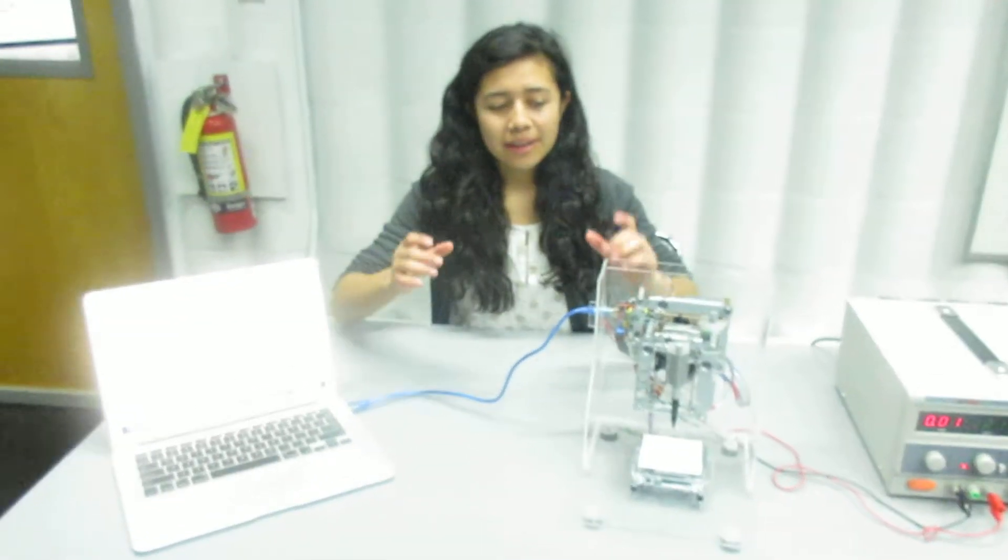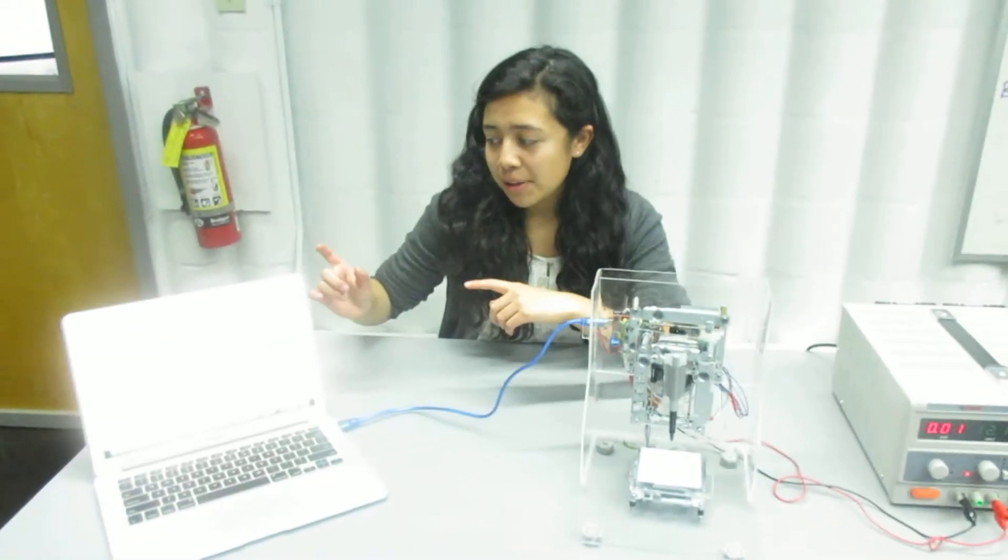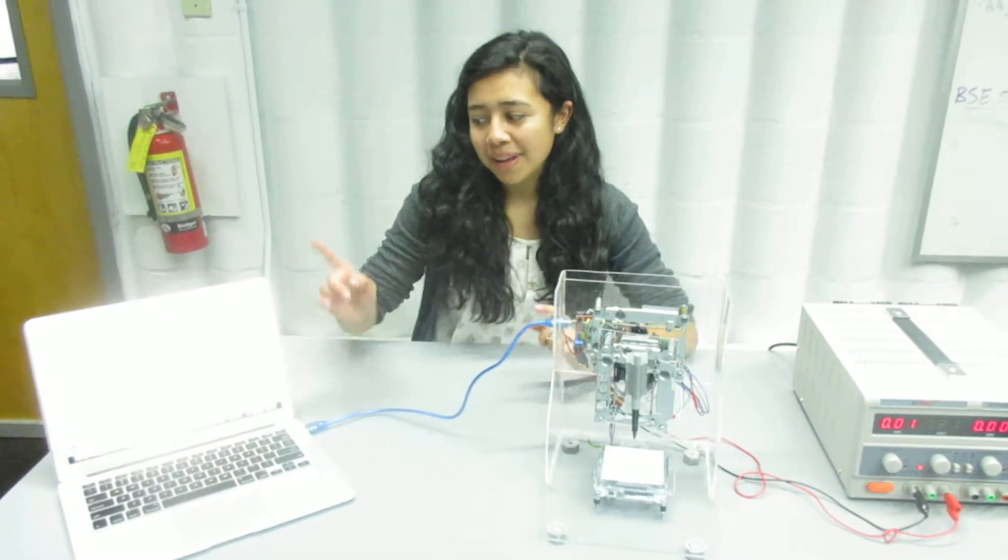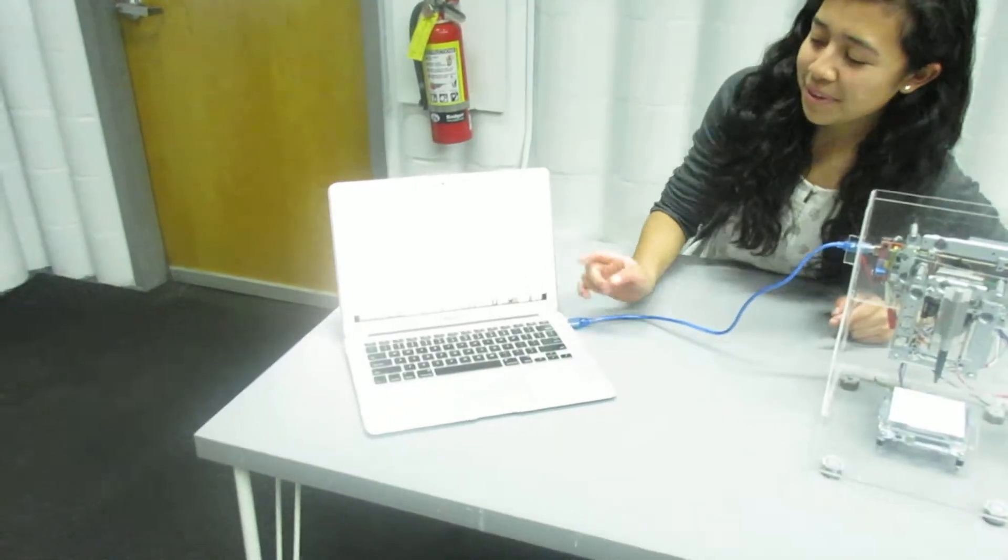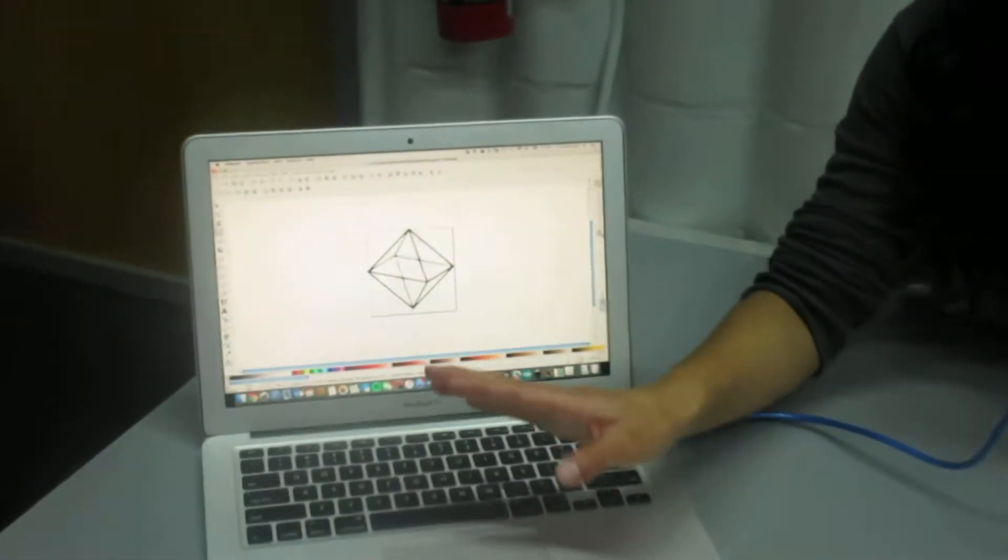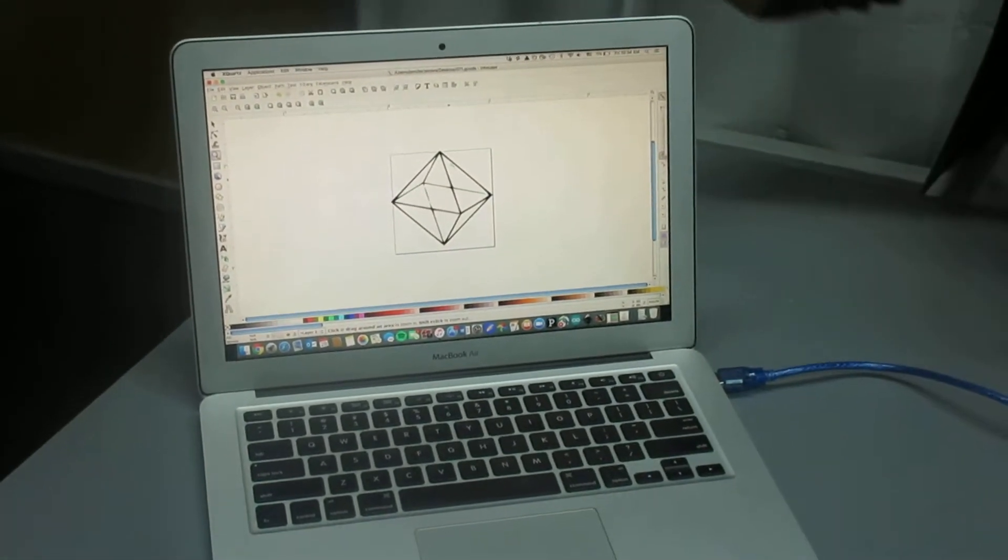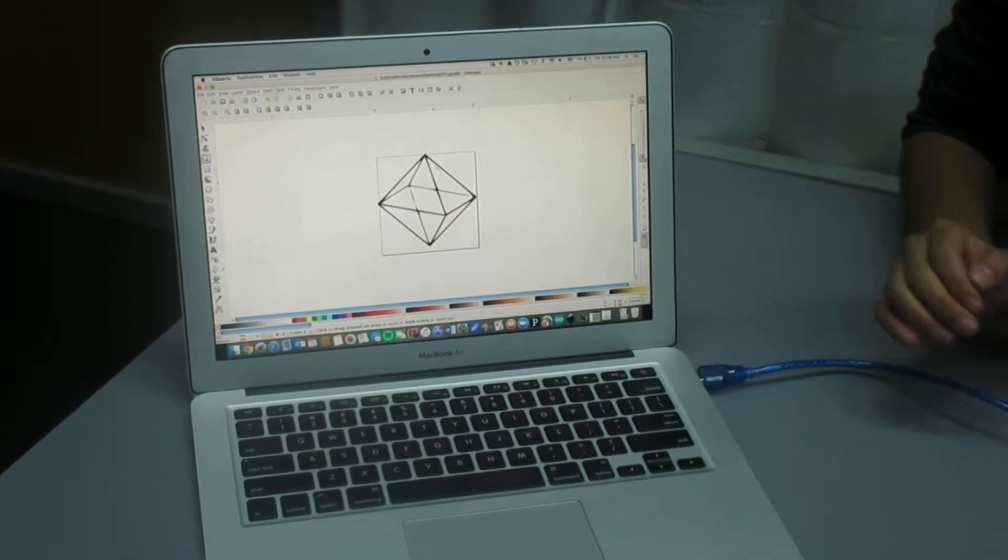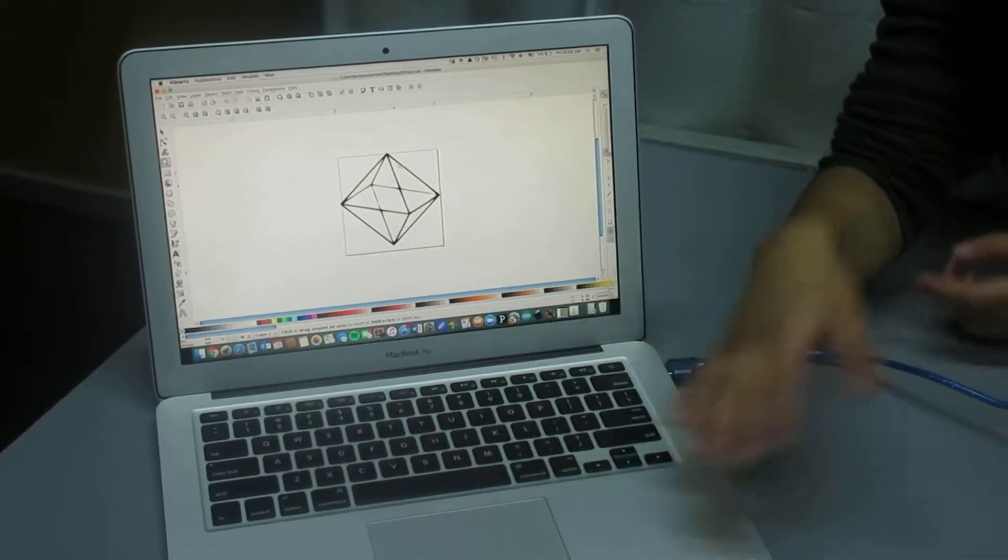Instead of sending lines of G-code using the Universal G-code Sender, I now create large G-code files using a program called Inkscape. For example, if I want to draw this image right here, I first upload the image into Inkscape and shrink it down until it fits inside that square. Then I create a G-code file.